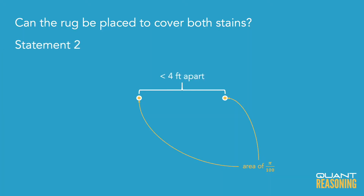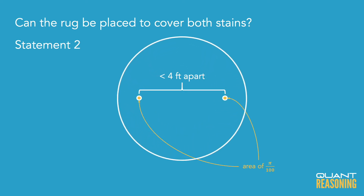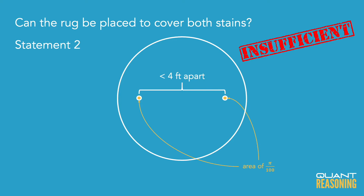So A and D are gone, and we're down to B, C, or E. Statement two does give us an upper limit for how far apart the two stains are, but now we've lost the information about the size of the rug. Without knowing anything about the size of the rug, giving us an upper limit on the distance between the stains is not sufficient — the rug could be really tiny, or it could be the size of the entire office. So statement two is also not sufficient on its own, and we should eliminate answer choice B.